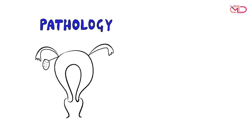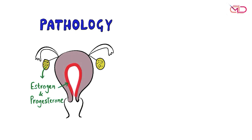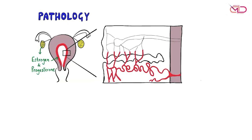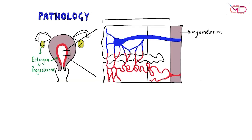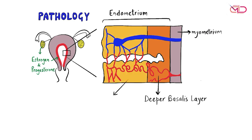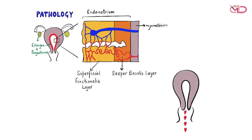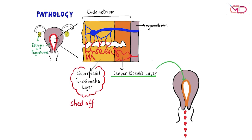Let's have a look at the pathology. Normally during a menstrual cycle, the ovaries produce estrogen and progesterone hormones that build up the endometrium in anticipation of a pregnancy. The endometrium differentiates into two layers: the deeper basalis layer and the superficial functionalis layer. During menses, it is the superficial functionalis layer that is shed, and the deeper basalis layer is responsible for endometrial regeneration.